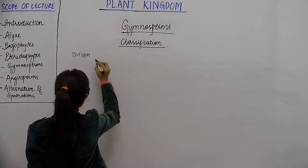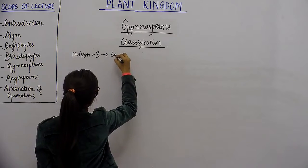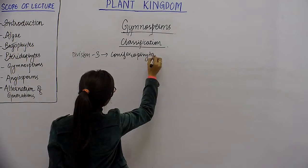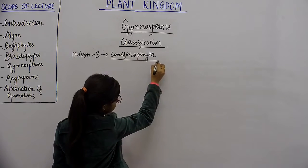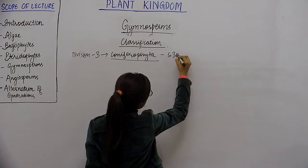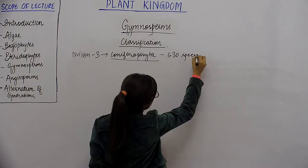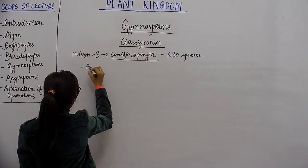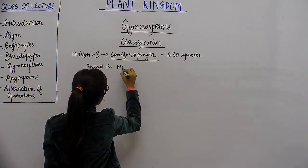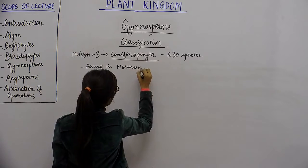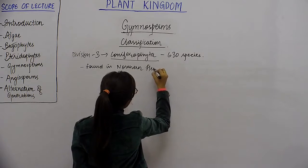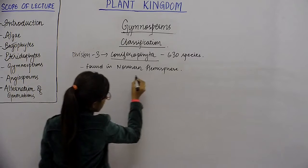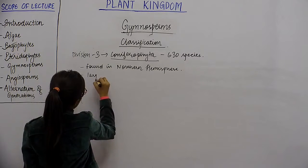We will now study Division 3, which is Coniferophyta. Coniferophyta have around 630 species worldwide. They are all found in the Northern Hemisphere and represent the largest group of Gymnosperms.